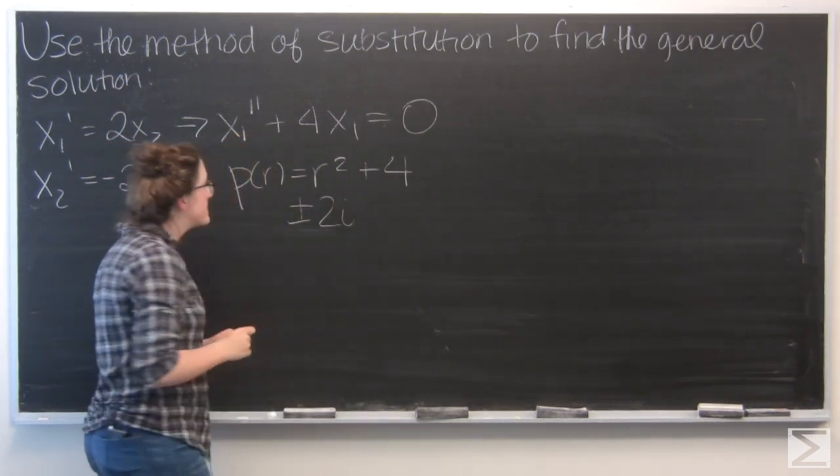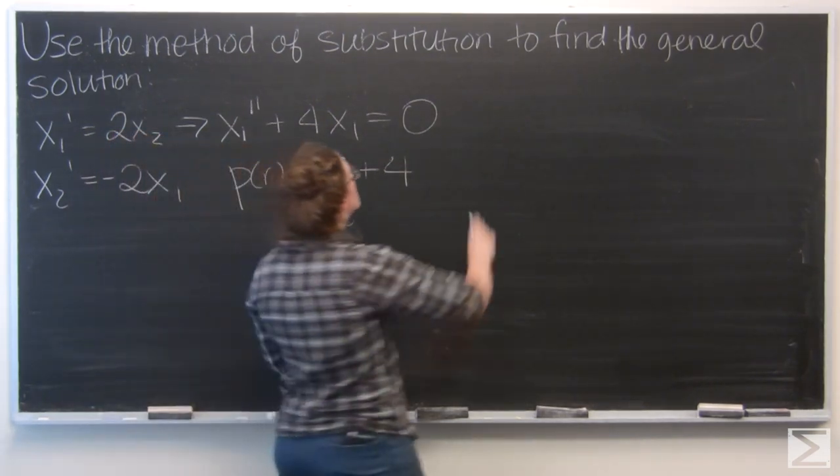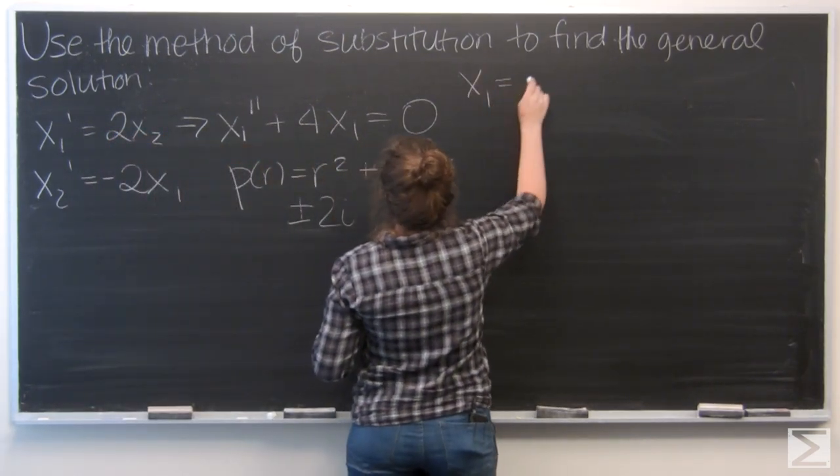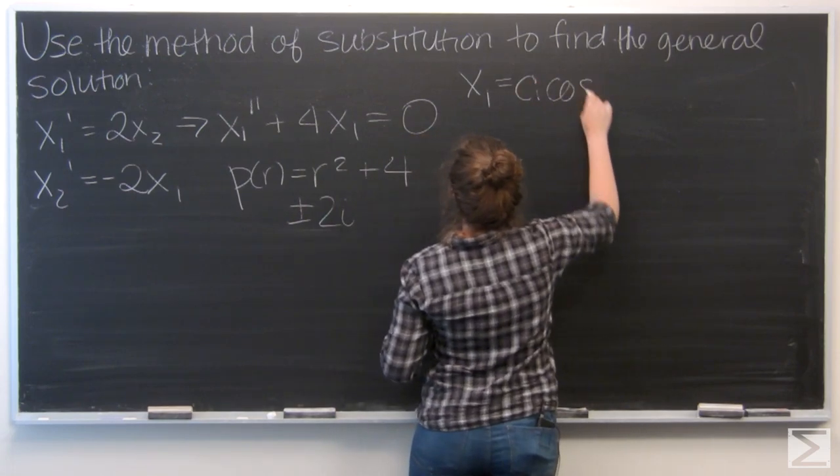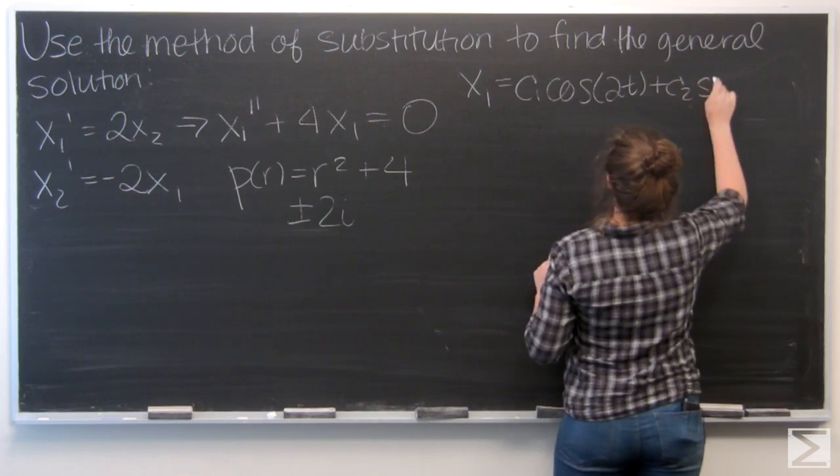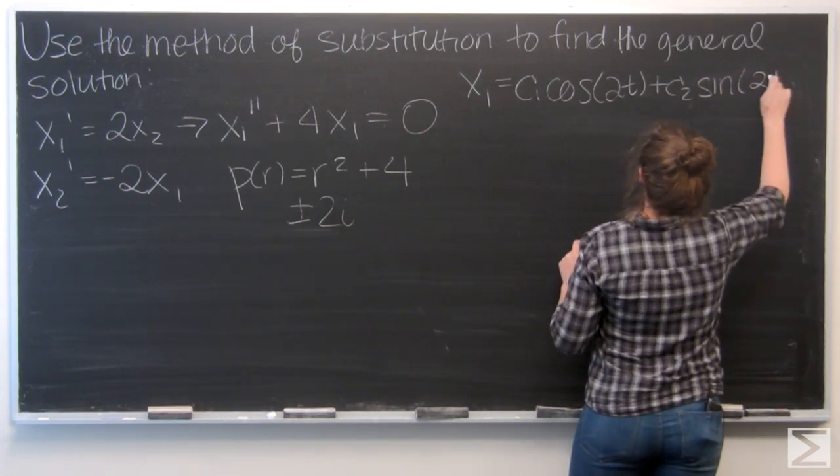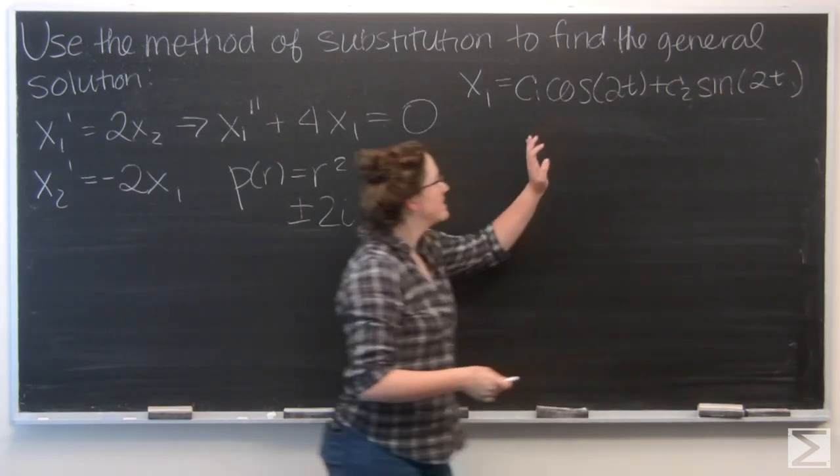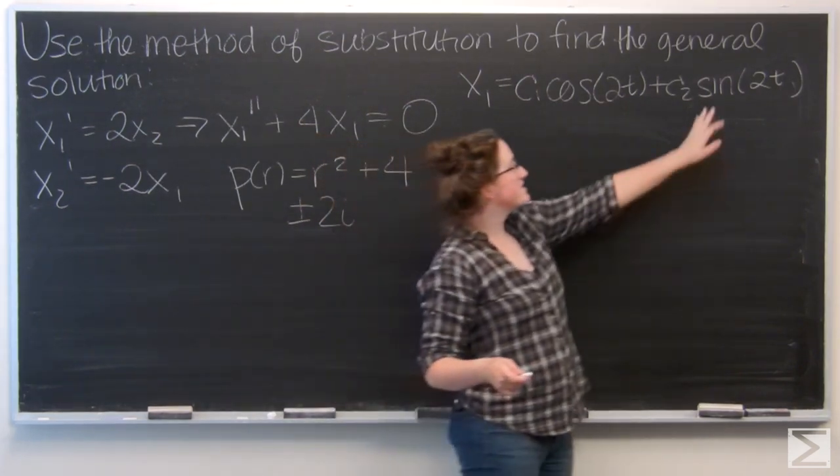And I can use that to write the general solution for x1. It's going to be some linear combination of cosine 2t and sine 2t.